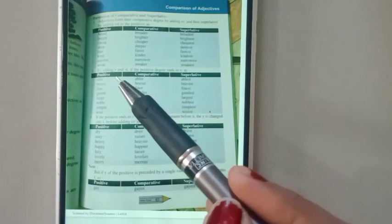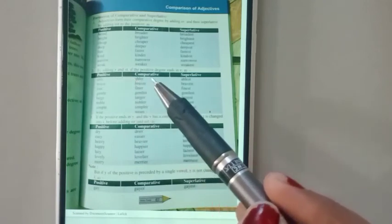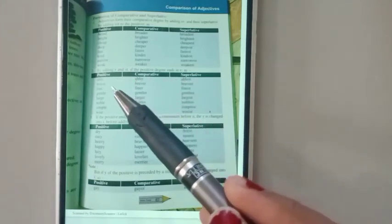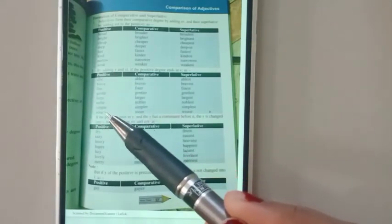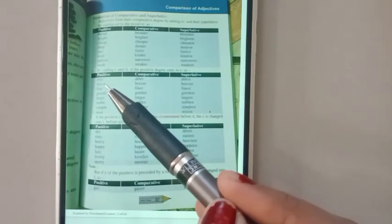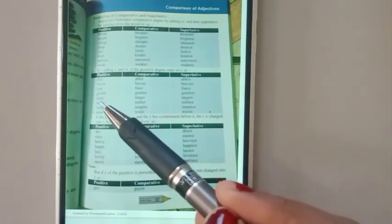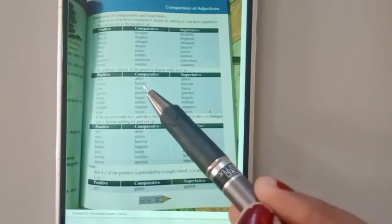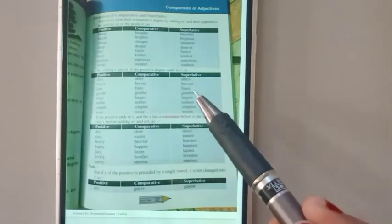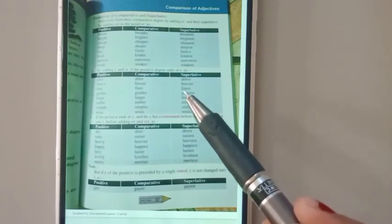By adding R and ST if the positive degree ends in E. So if this positive degree ends in E, we can find E at the end of these words. In the comparative degree, we have to add R at the end of these words. And in the superlative degree, we have to add ST at the end of this word. Let us read.